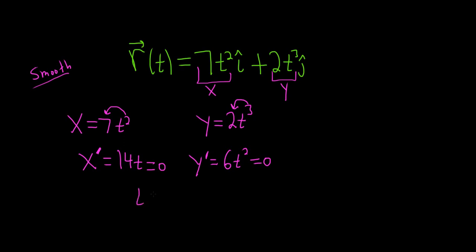And we can see if we solve the first one we get zero by dividing by 14. Likewise in the second one we get zero. So zero is a solution to both equations. Therefore these guys will both be zero when t is equal to zero.